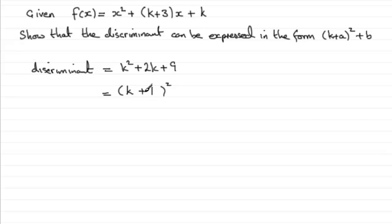Now if you expand this, K plus 1 all squared, we'll see what we get. Let's just work out what K plus 1 multiplied by another K plus 1 gives us. K plus 1 squared, in other words.